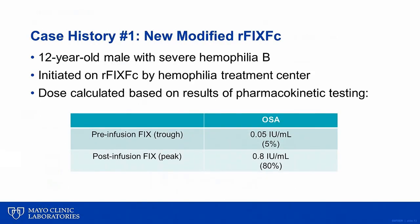Next, we will discuss a case illustrating the importance of the type of contact activator used in the one-stage assay and its effect on measurement of factor IX. A young patient with hemophilia B was initiated on an extended half-life factor IX concentrate. Following standard practice, a pharmacokinetic study was performed to determine the optimal dose and frequency of factor infusions. In this patient, his trough or pre-infusion factor IX level was 5%, and a sample obtained approximately one hour after the infusion was 80%.